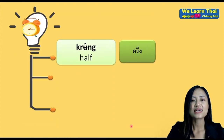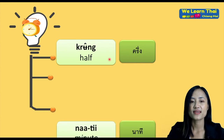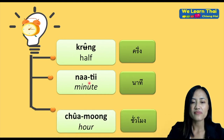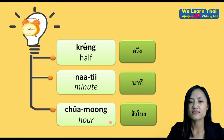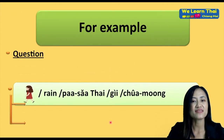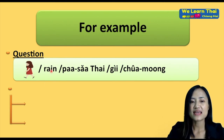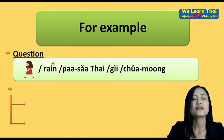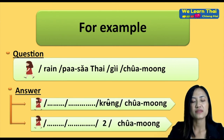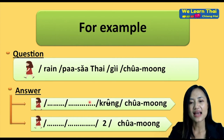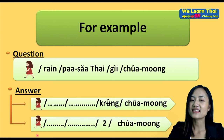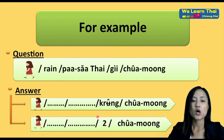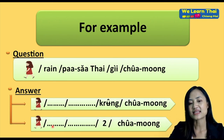'Krue' means half, 'nati' means minute, 'chua moong' means hour. For example, the question: 'คุณเรียนภาษาไทยกี่ชั่วโมง' — how many hours do you study Thai? For the answer you say 'ฉันเรียนภาษาไทยครึ่งชั่วโมง' — I study Thai half an hour, or 30 minutes. Or you can say 'ฉันเรียนภาษาไทยสองชั่วโมง' — I study Thai two hours.